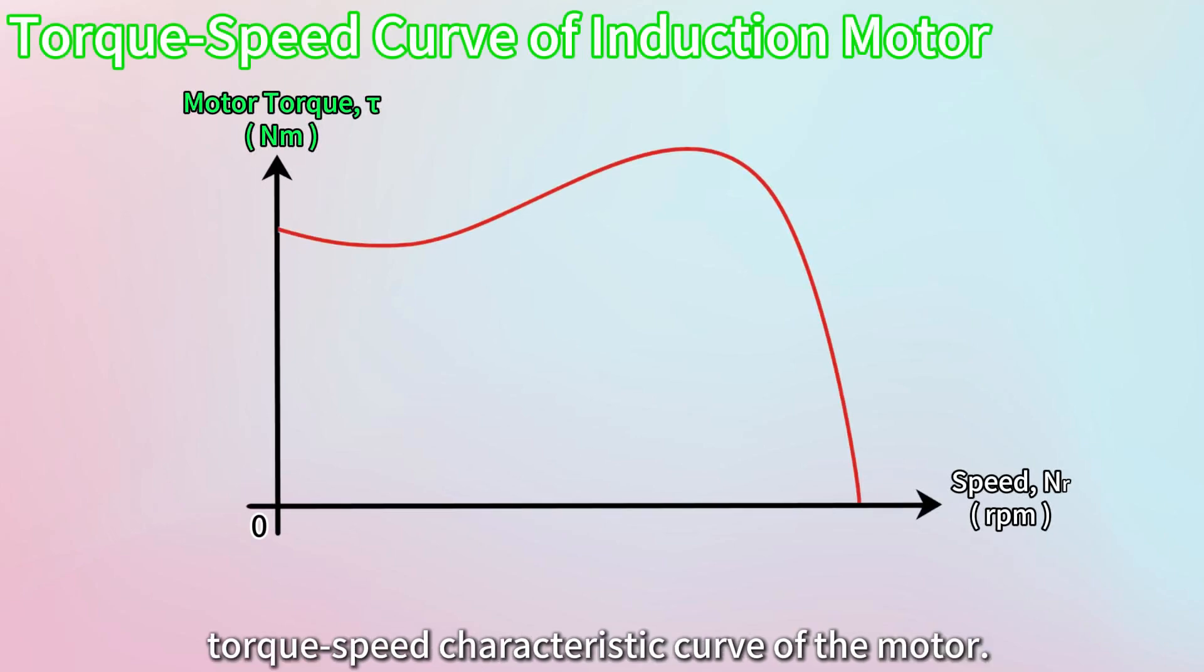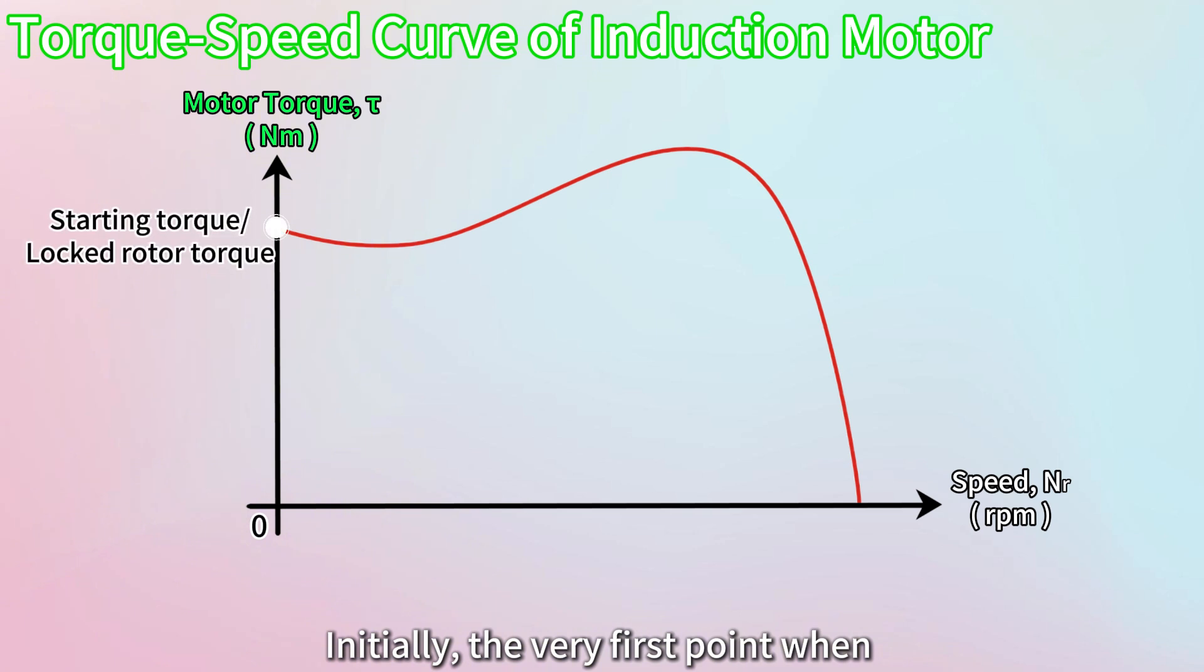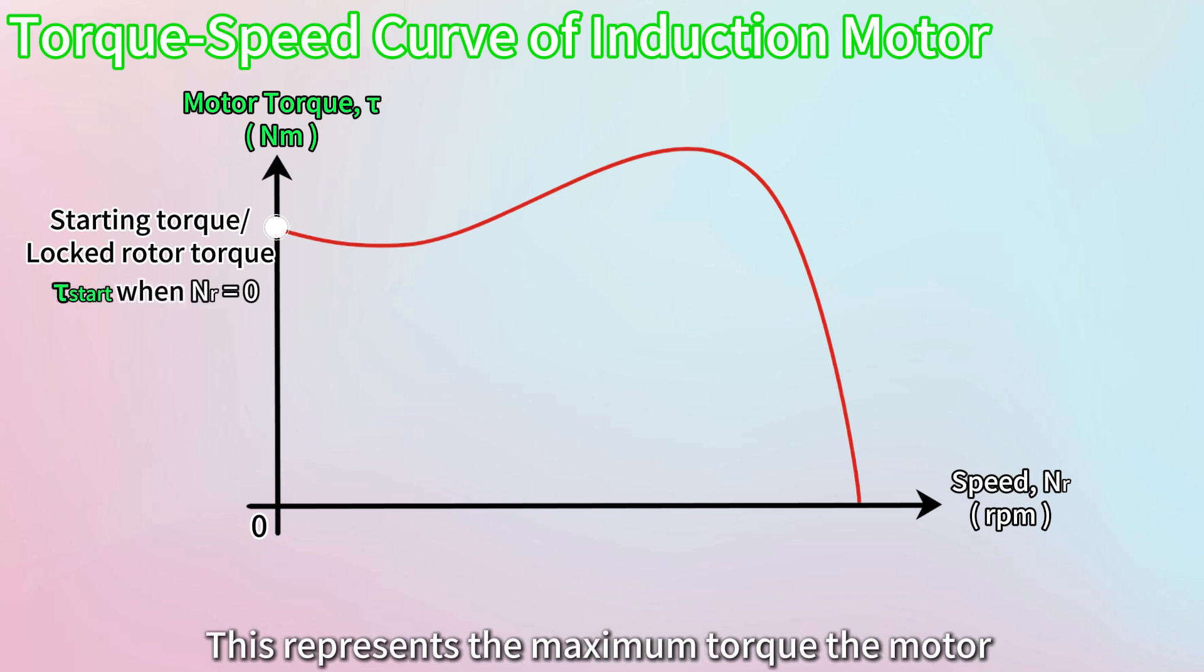Now, let's talk about the torque speed characteristic curve of the motor. Initially, the very first point when the motor starts to turn is known as the starting torque or locked rotor torque. This represents the maximum torque the motor can produce when the rotor is at rest or zero speed. As long as the load on the motor is less than or equal to this starting torque, the motor will successfully start.